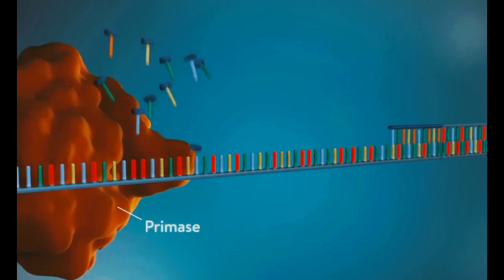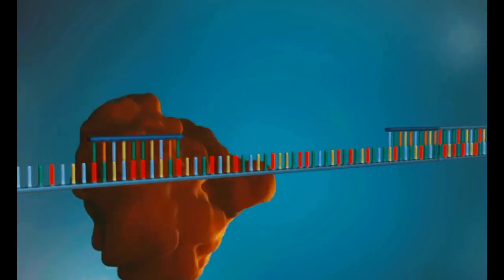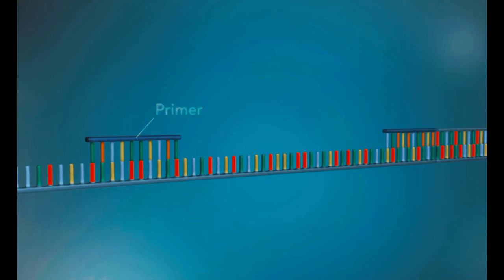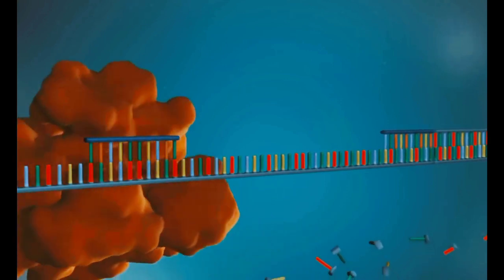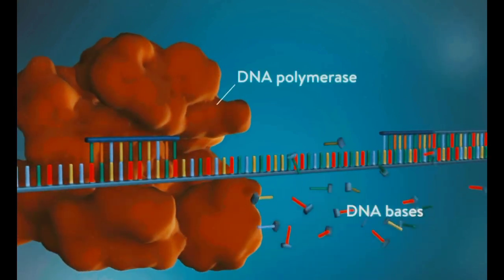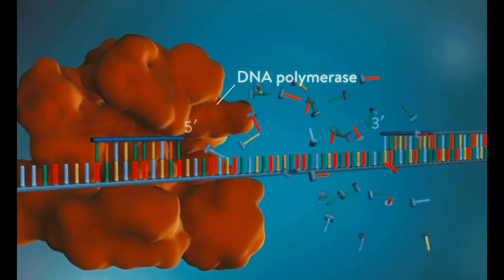Each fragment is started with an RNA primer. DNA polymerase then adds a short row of DNA bases in the 5' to 3' direction.